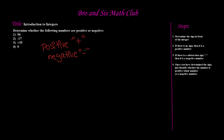Now we have this example. It says: determine whether the following numbers are positive or negative. So that means only two categories — positive or negative. Here we have the steps, and step one says: determine the sign in front of the integer. Remember, the signs are plus or minus.